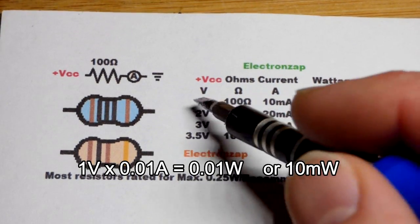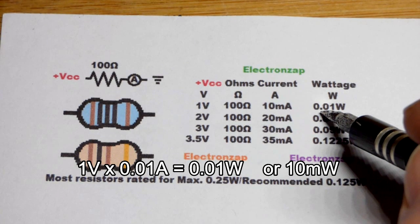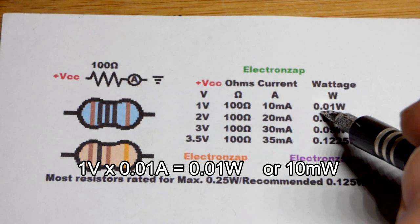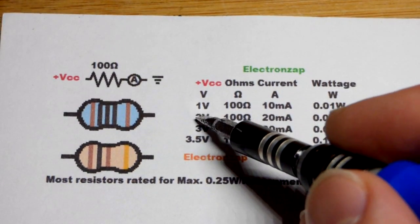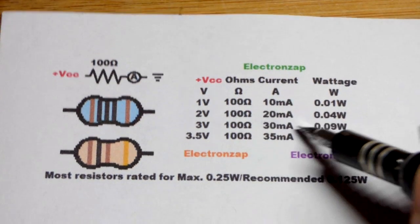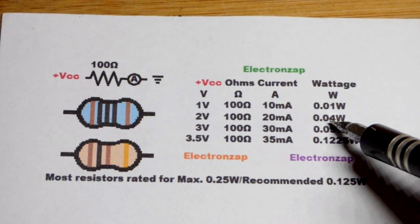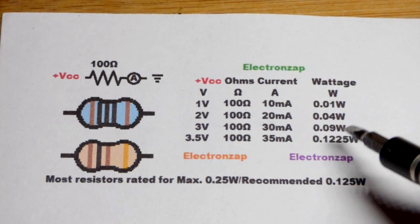You multiply the current times the voltage to get the wattage. 0.01 amps times 1 volt is 0.01 watt. Pretty straightforward. When we bump it up to 2 volts, we got twice the voltage and twice the current. Multiply them together, you got 4 times as much heat being generated. That's 0.04 watts.